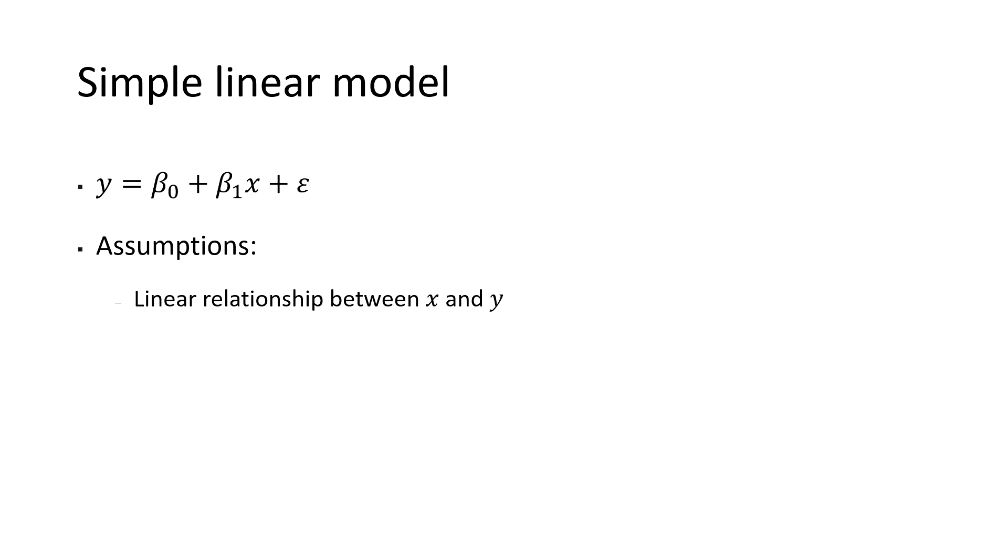However, this relationship is not deterministic since an error term epsilon is added. This error term is assumed to follow a normal distribution with mean zero and variance sigma squared. Moreover, the error terms for different observations are assumed to be independent of each other.